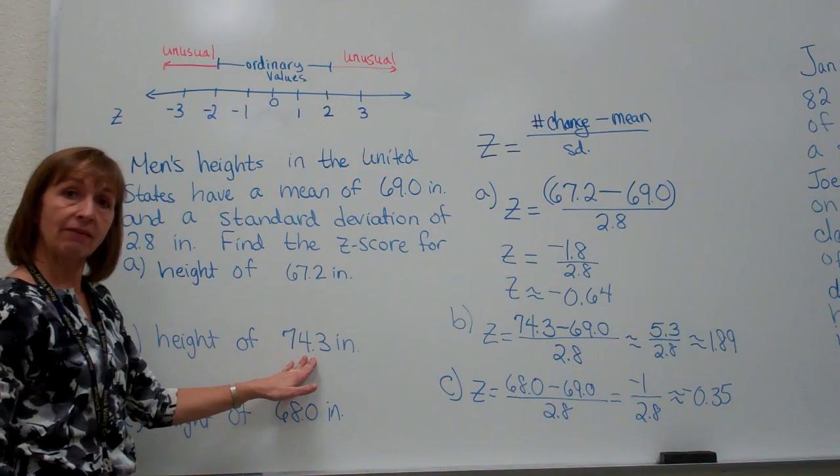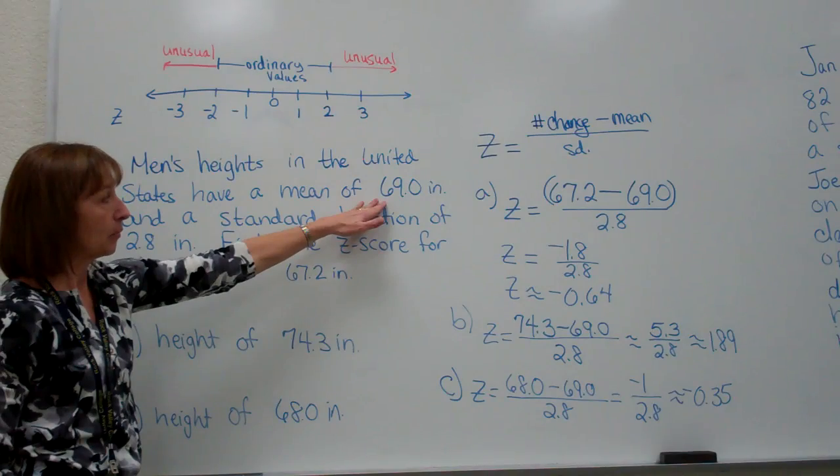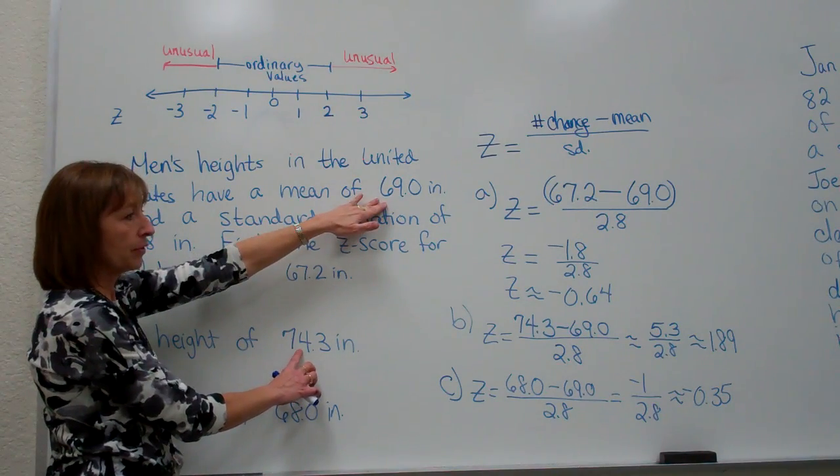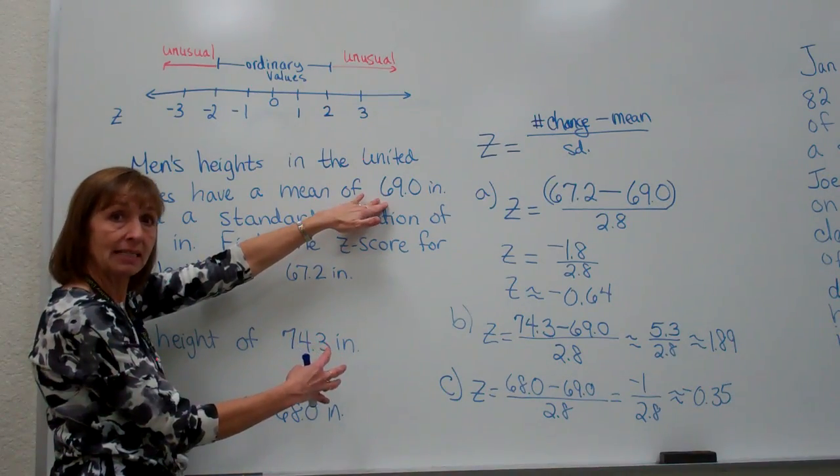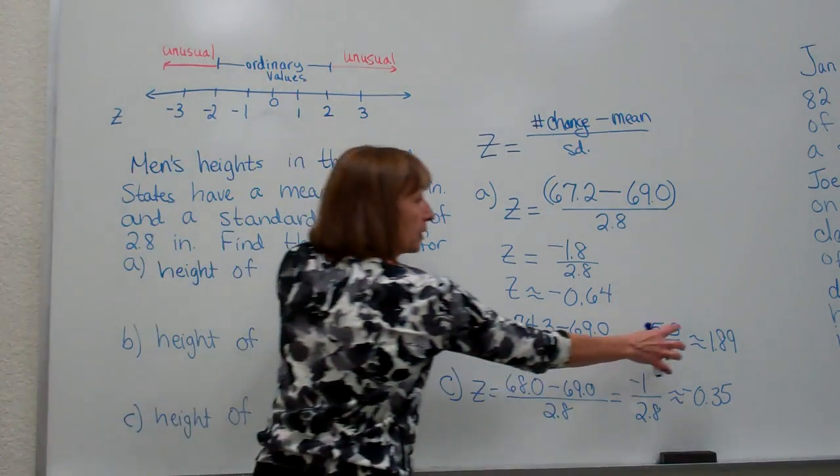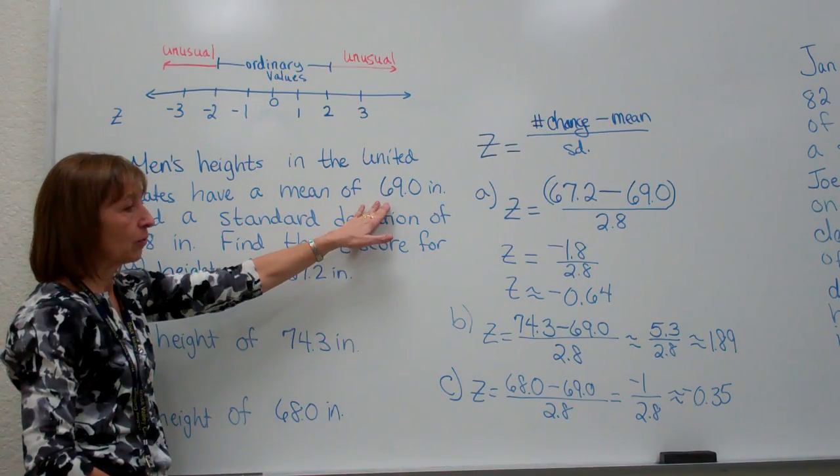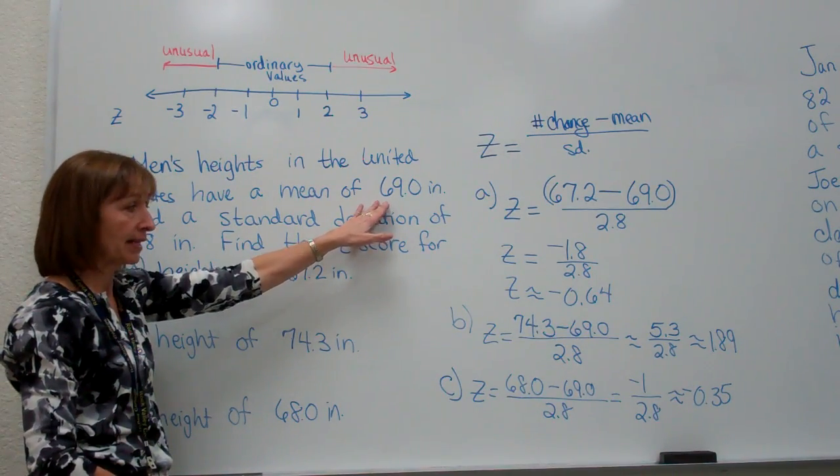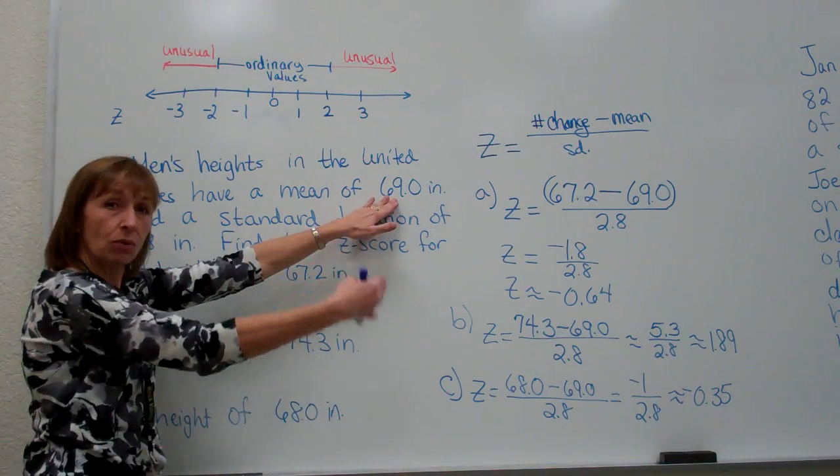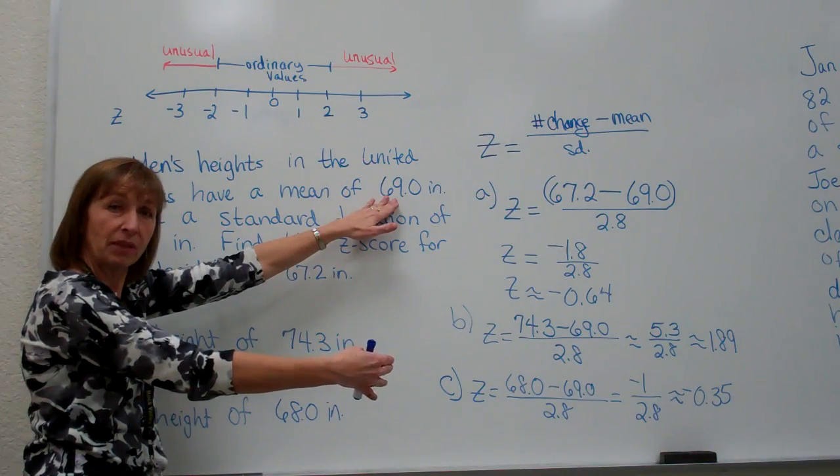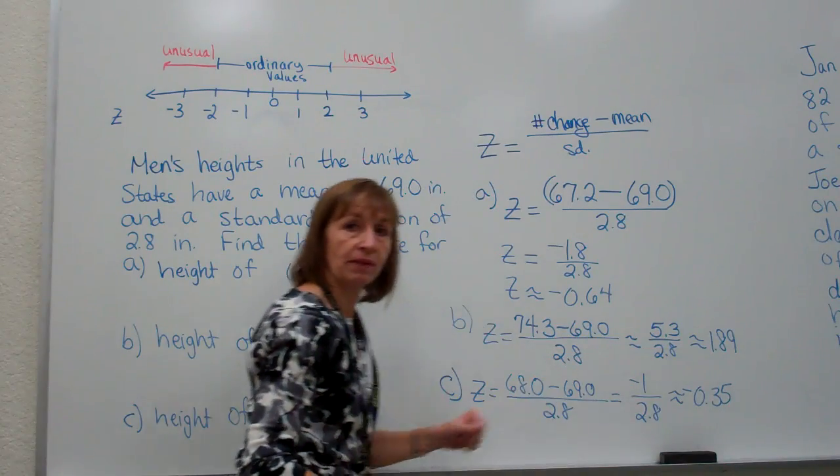For my 74.3, we look at our mean of 69.0. 74.3 is bigger than the mean, so I should be getting a z-score that's positive, which I did. And when I look at what I got from my z-score, it's 1.89, which makes sense that my 74.3 is more than one standard deviation above the mean, but not more than two standard deviations above the mean.